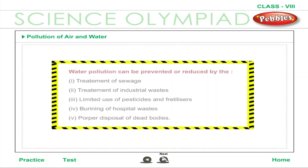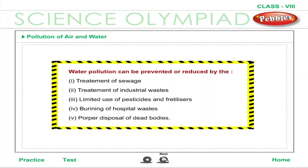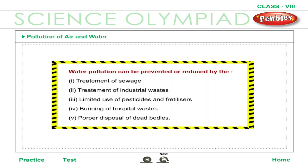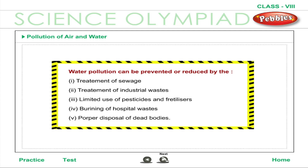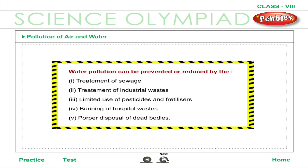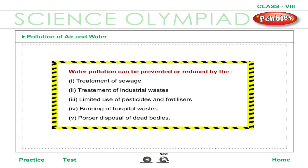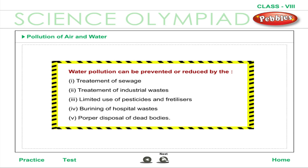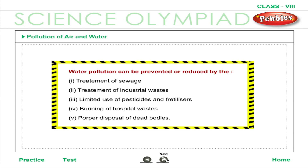Water pollution can be prevented or reduced by the treatment of sewage, treatment of industrial wastes, limited use of pesticides and fertilizers, burning of hospital wastes, and proper disposal of dead bodies.